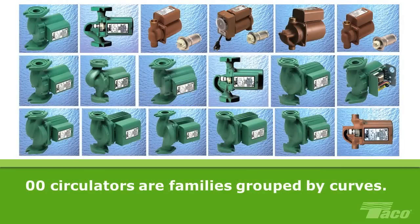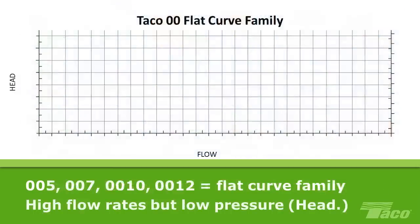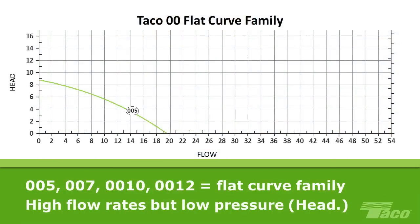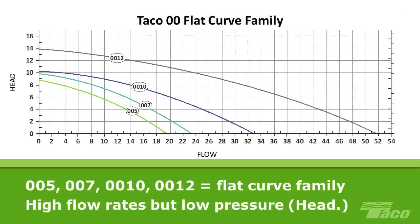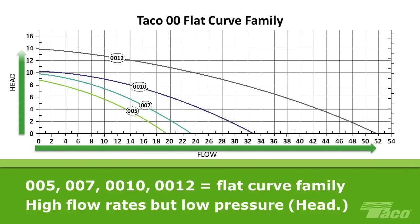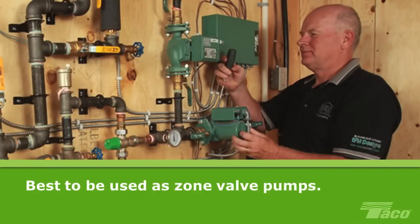It's helpful to think of Tayco 00 fixed-speed circulators in terms of families grouped together by their curves. The 005, 007, 0010, and 0012 circulators are all members of the flat curve family — they can produce high flow rates but relatively low pressure. A smaller flat curve pump, such as the 005 or 007, is ideal as a system circulator for zone valves in standard residential jobs or as a zone pump. The larger flat curve pumps, like the 0010 and 0012, are designed for larger residential jobs or light commercial applications.